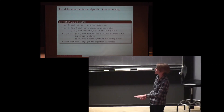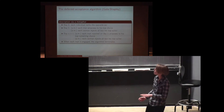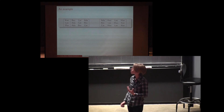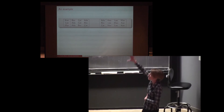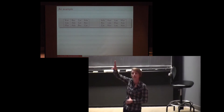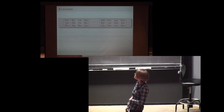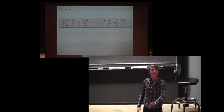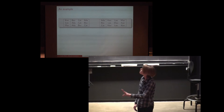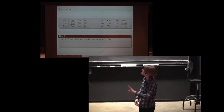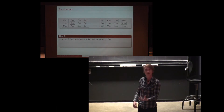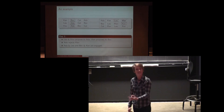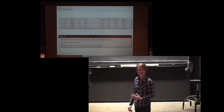Before proving this, let's think about an example. Imagine a simple dating pool where there are just three men and three women whose preferences are listed here, read in decreasing order from left to right. On the first day, the men propose to their top choice. Ada receives two of these proposals; Bev receives one. Ada's the only one with a choice — she prefers Leo, so Max is rejected and he's back on the singles market.